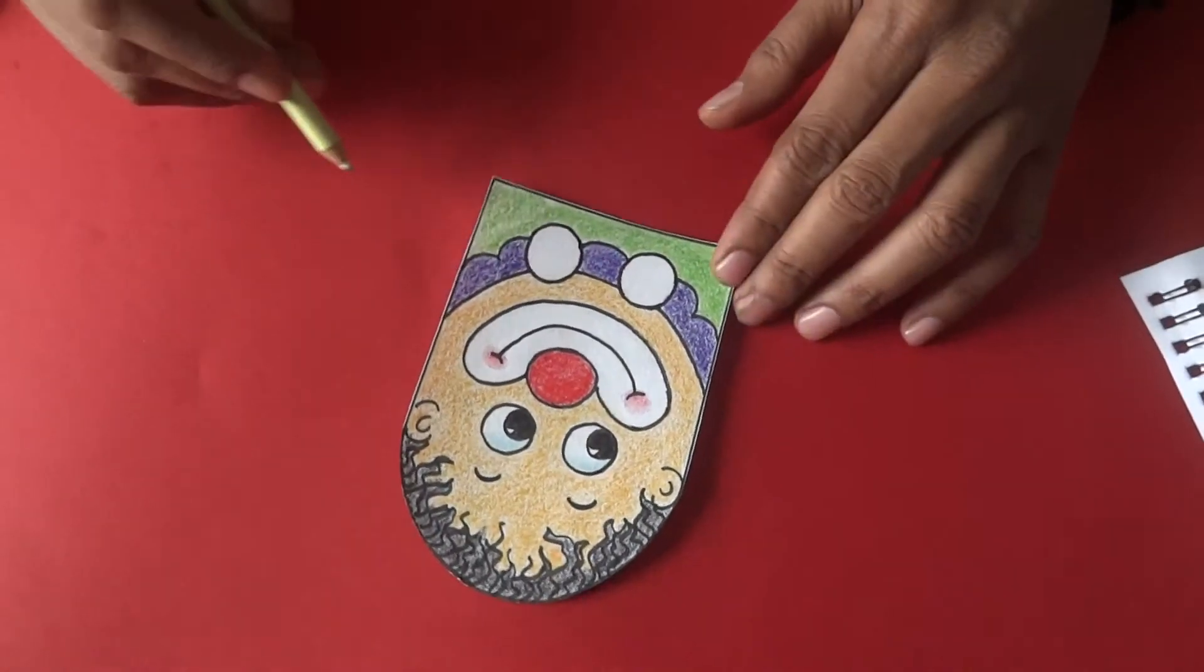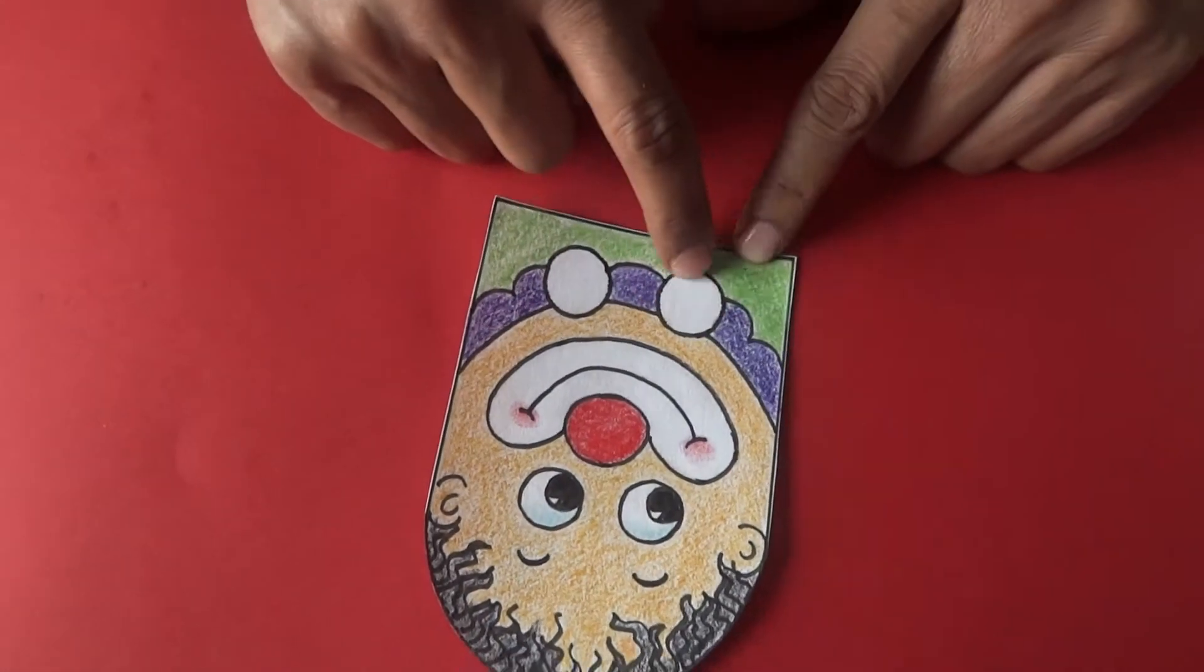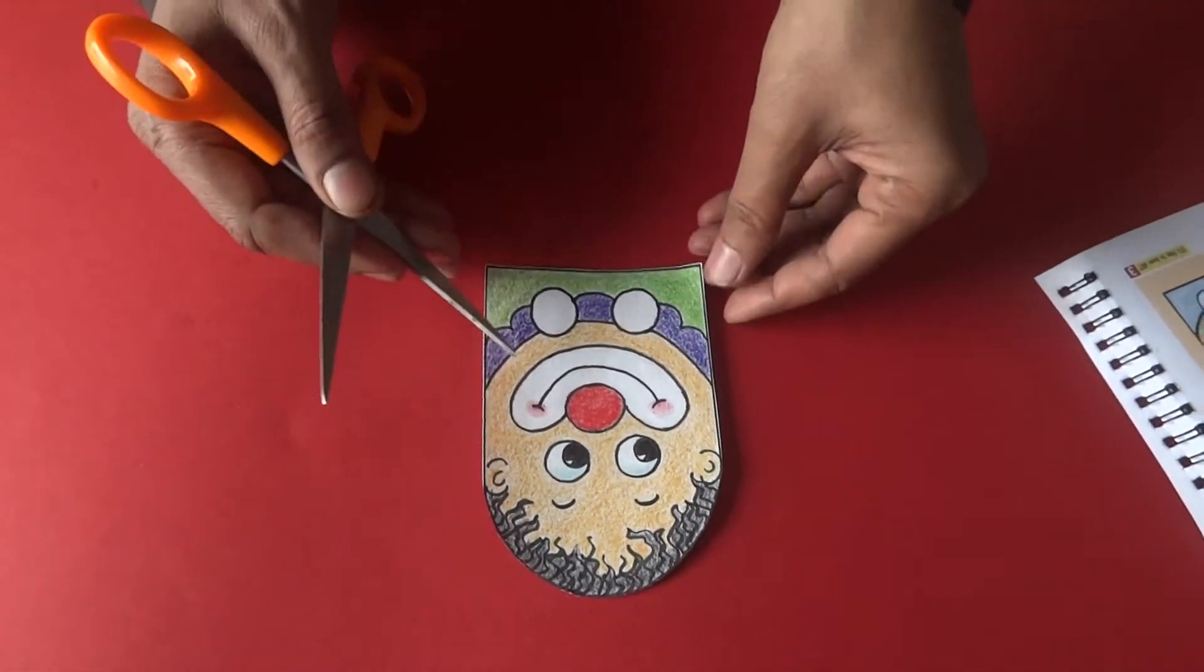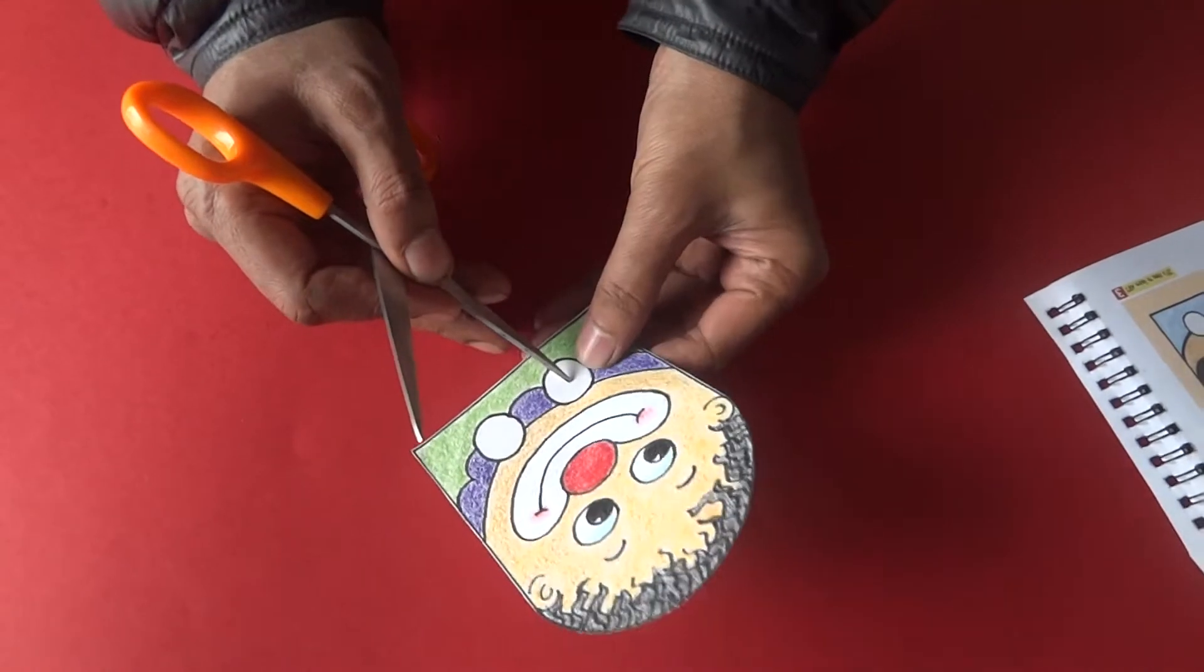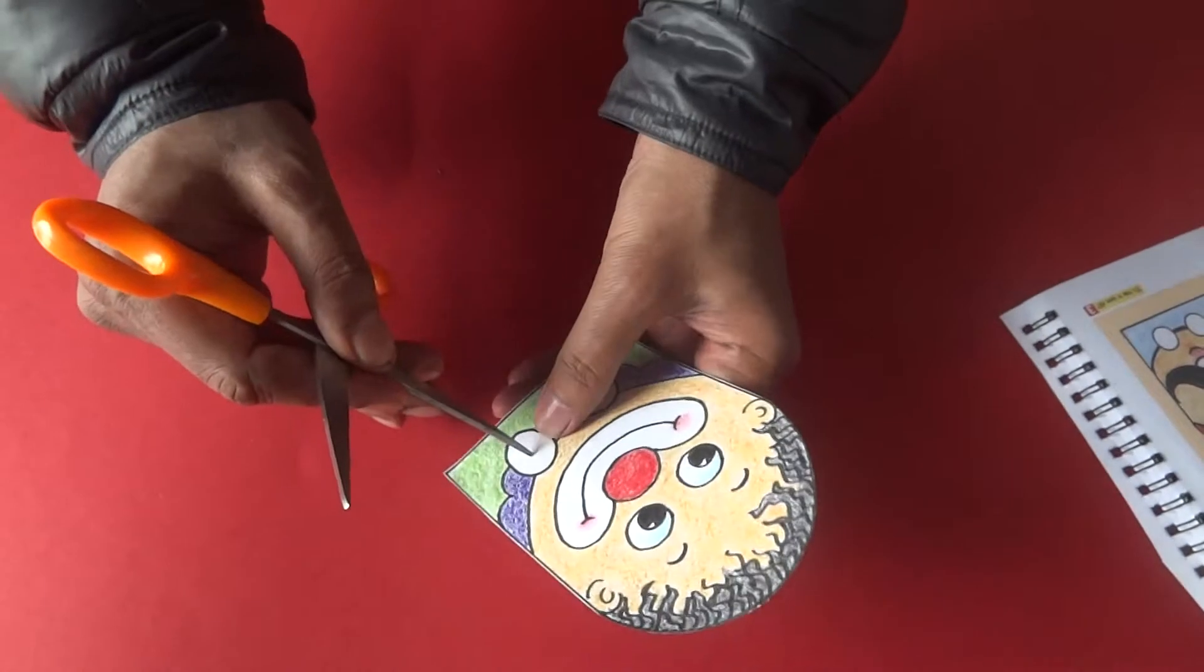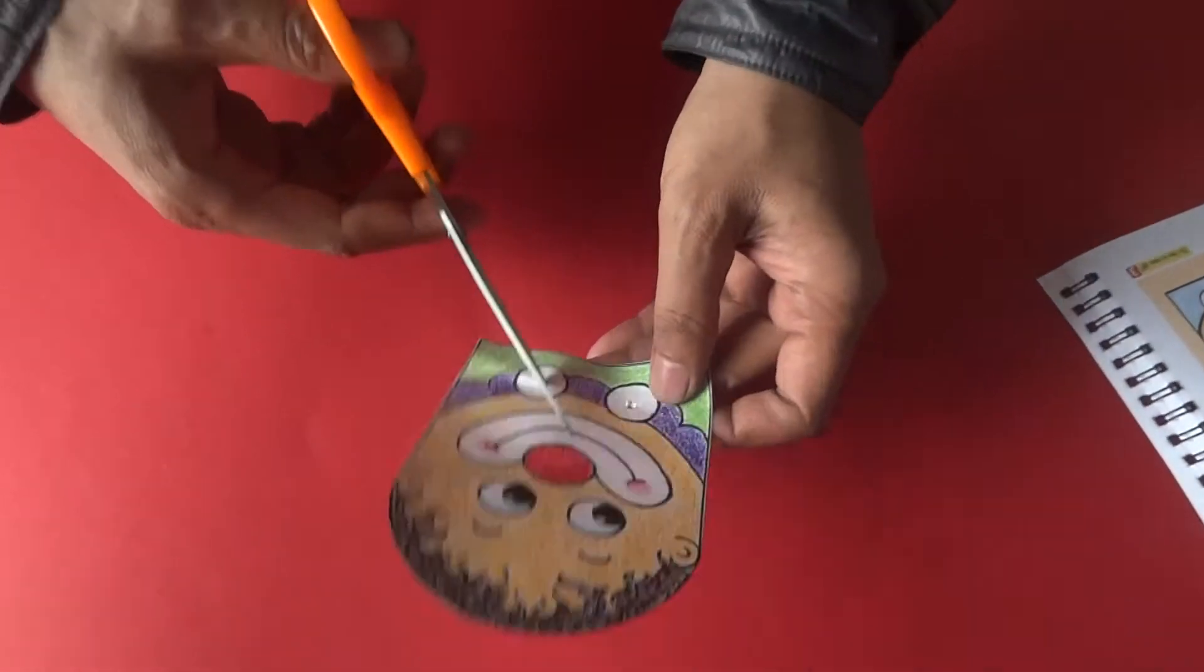Finally, take help from an elder and cut out these two holes. So you take a scissor, pierce it and then cut it out.